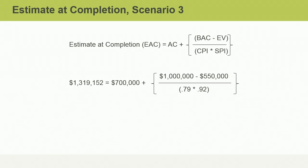Since this scenario is rather complex, take a moment to review this formula. The actual cost is $700,000. The BAC is $1,000,000 and the earned value is $550,000. If we subtract the EV from the BAC, we can determine the value of the work left — the numerator is $450,000. Next, let's multiply the CPI of .79 times the SPI of .92 to get a denominator of .7268. If we divide the numerator of $450,000 by the denominator of .7268, we get $619,152.